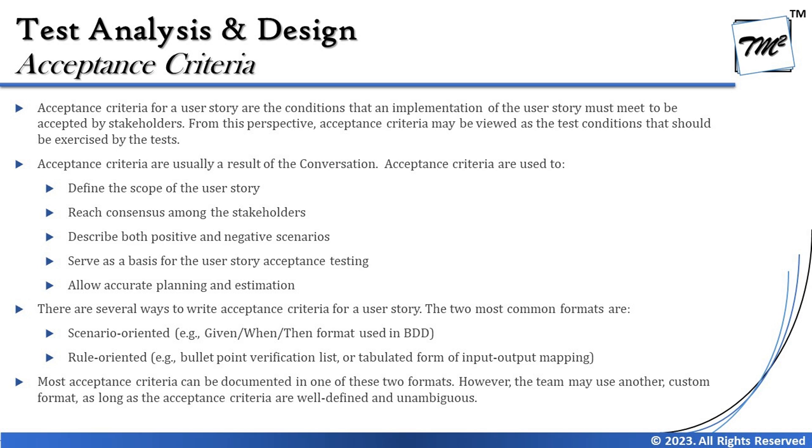Acceptance criteria for a user story are basically the conditions that an implementation of the user story must meet to be accepted by the stakeholder. From this perspective, acceptance criteria may be viewed as the test conditions that should be exercised by the test as well. Given that acceptance criteria are those remarkable conditions by which the business will accept your story in the form of what they wanted, the same acceptance criteria could be a great set of test conditions for us. It is just not limited to implementation — it's not only for developers. Acceptance criteria are equally important for test engineers as well.